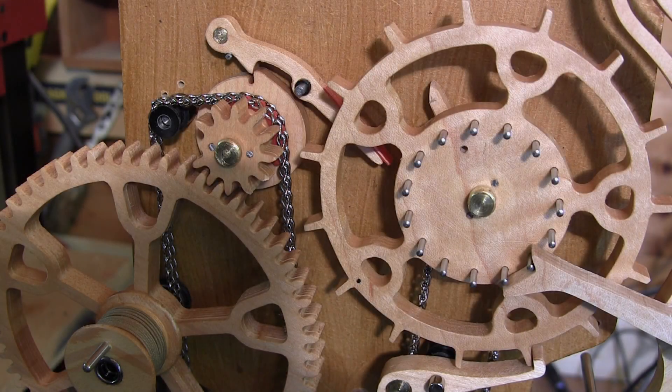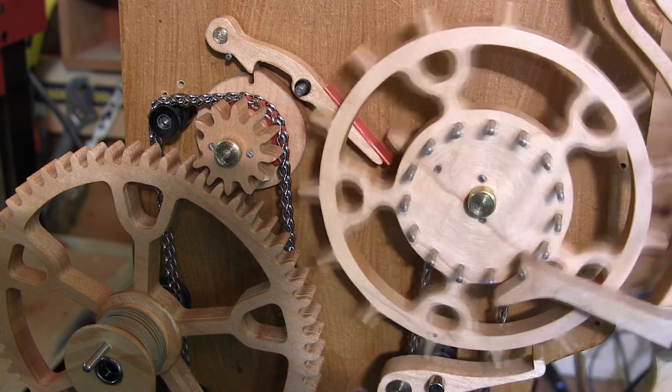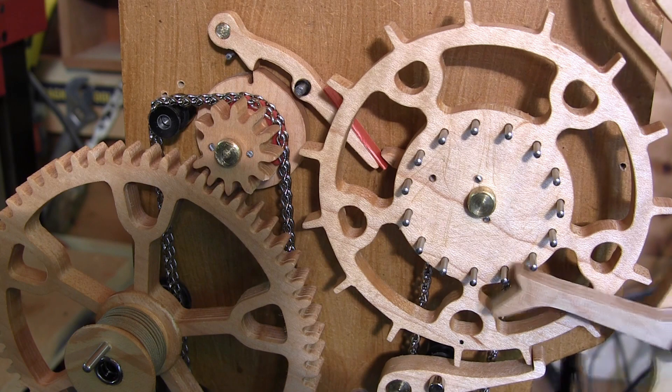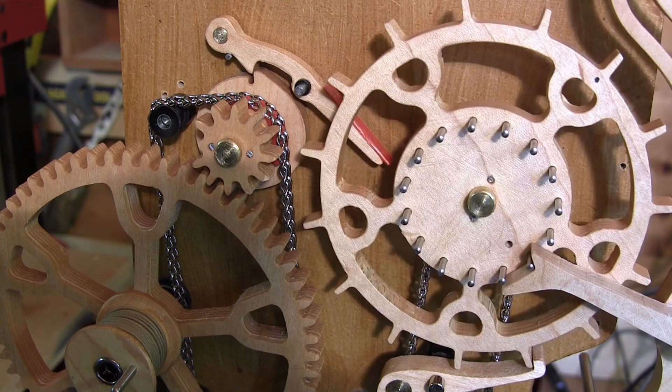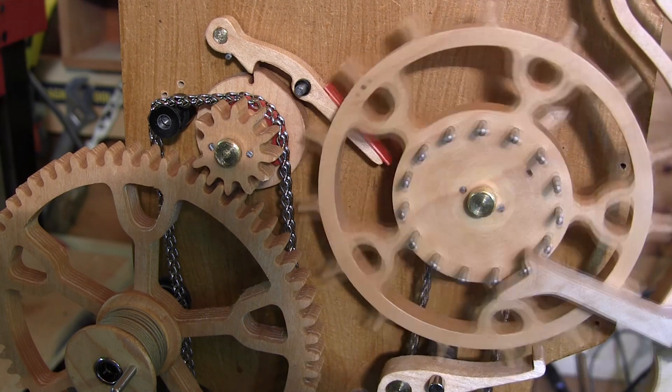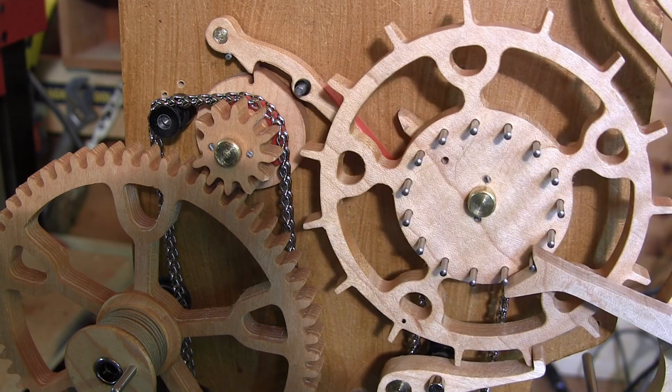However, this rig incorporated a revised method for releasing the latch. It used a finger mounted at the back of the escape wheel that released the latch once every revolution. This was simpler than the Robin design used in the first rig and turned out to be more accurate.